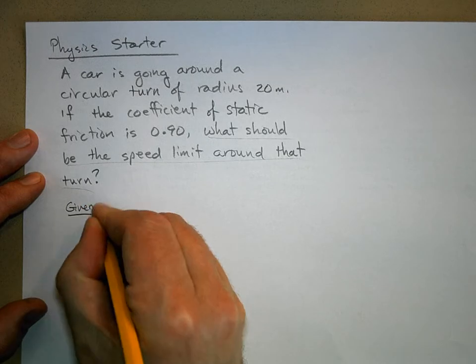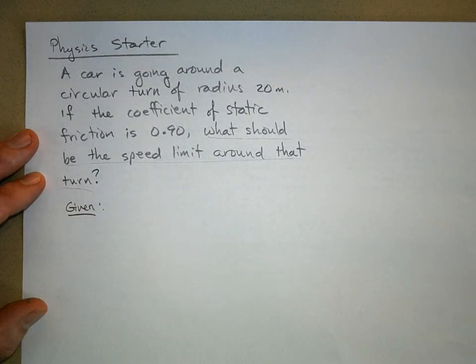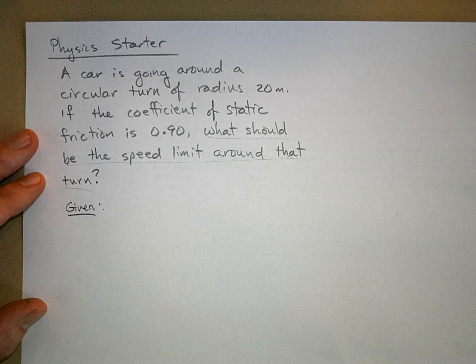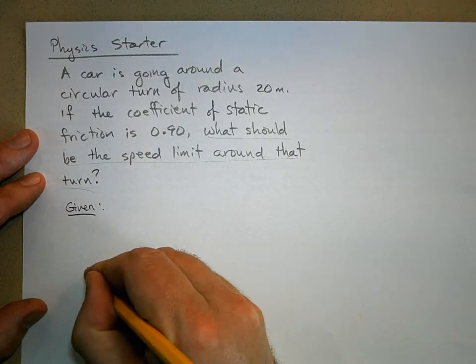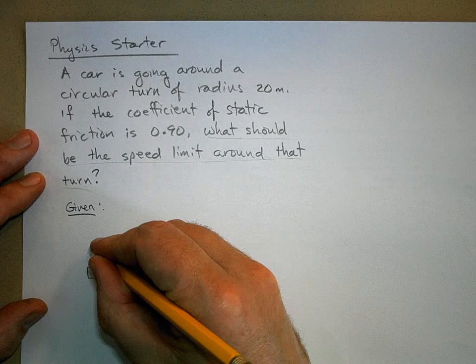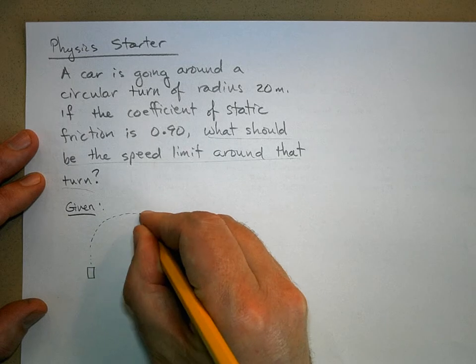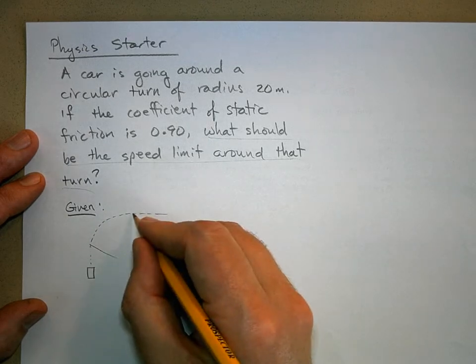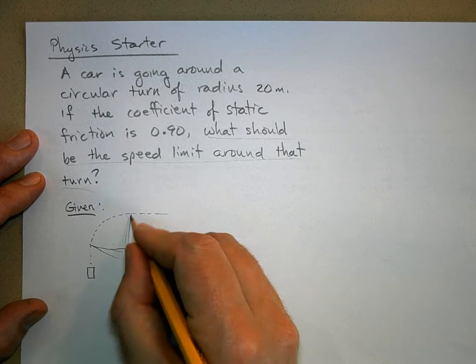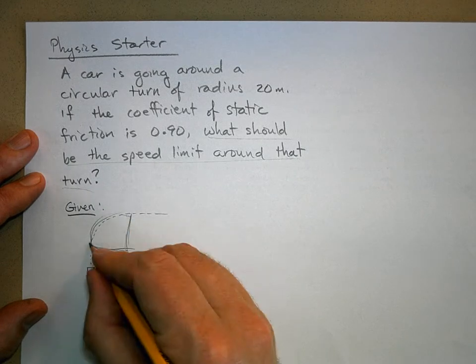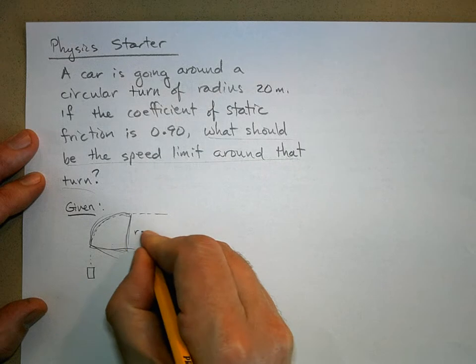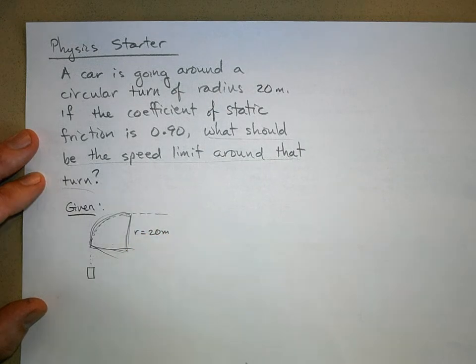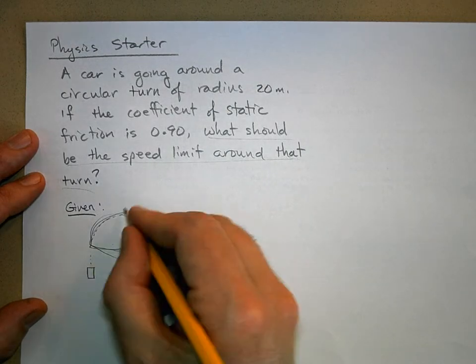Let's just draw a picture like we're in a helicopter looking down and here's a car driving down the road and it's going to go around this turn. At least for this sector it's like a quarter of a circle, so you're in circular motion right through there.